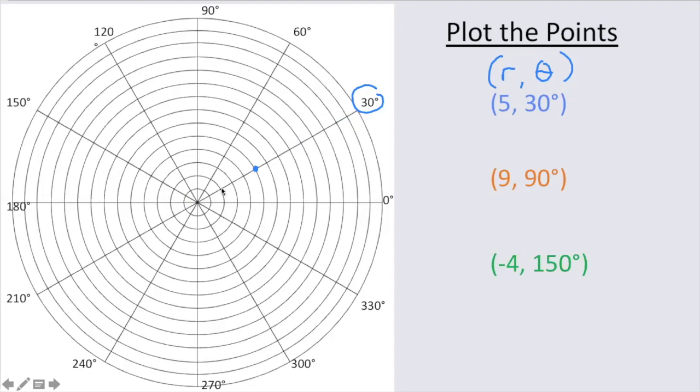That's how you'd plot the point 5 comma 30 degrees, because you're on the 30 degree radius, if you will, and I'm 1, 2, 3, 4, or 5 concentric circles, or 5 units out from the origin.